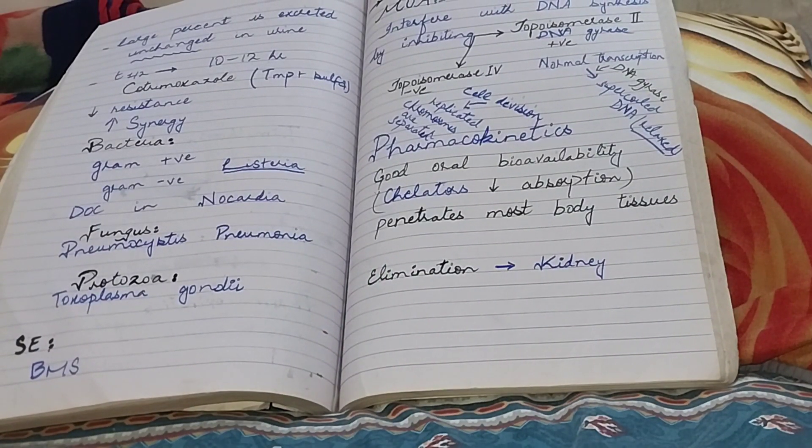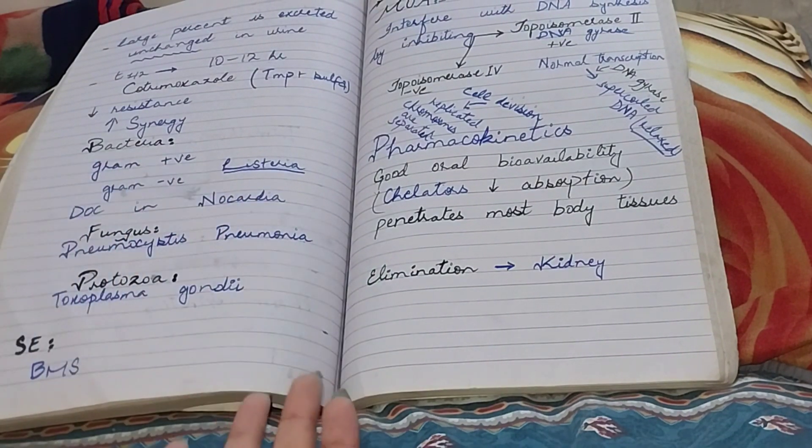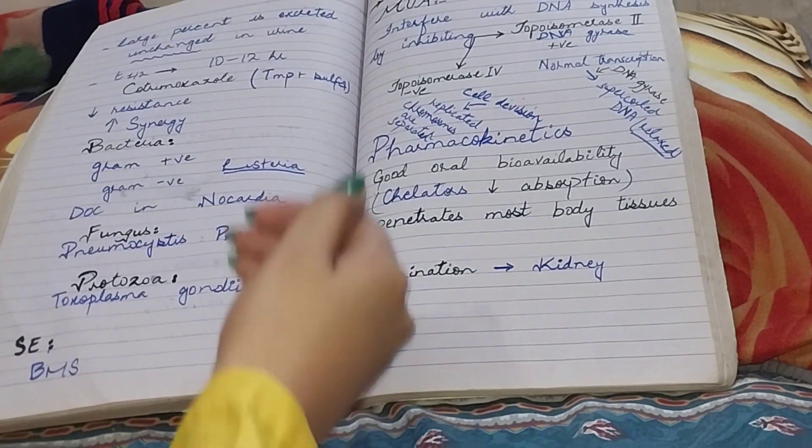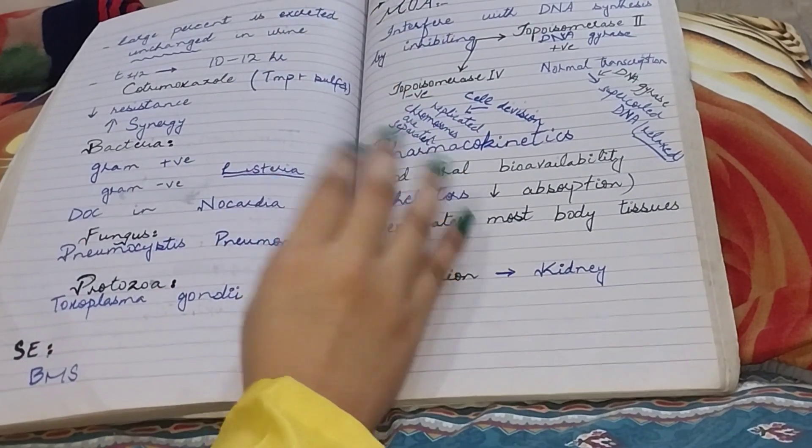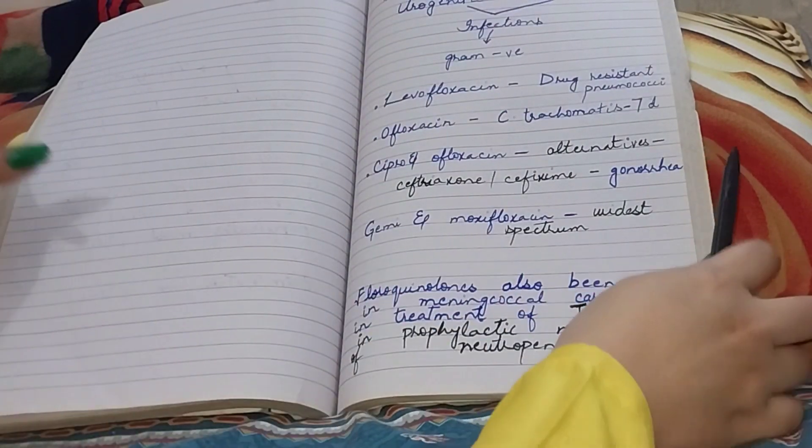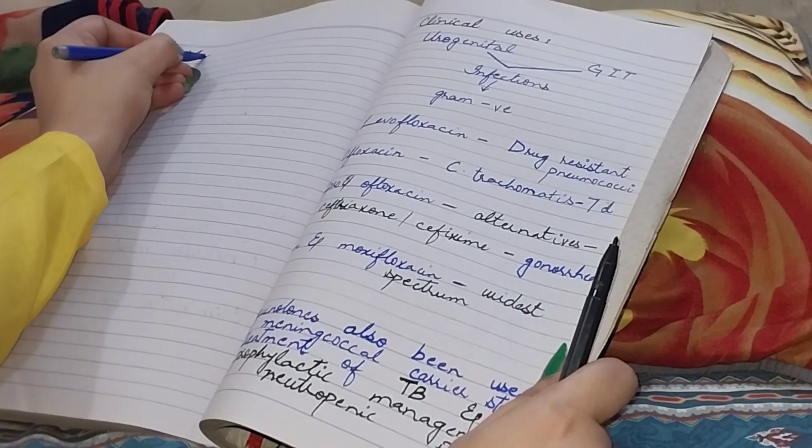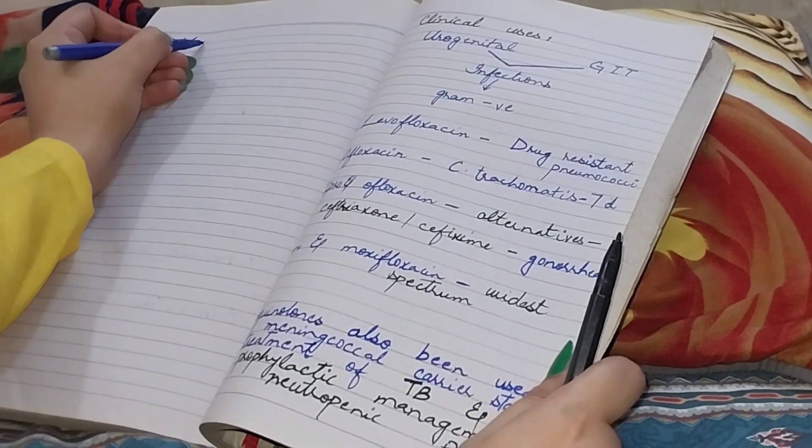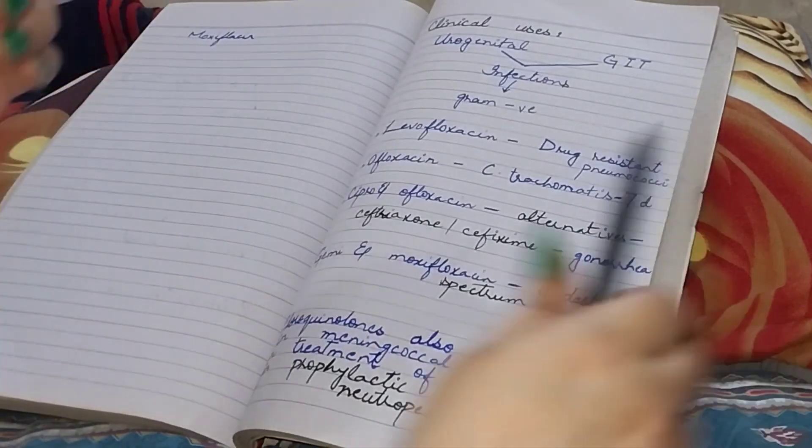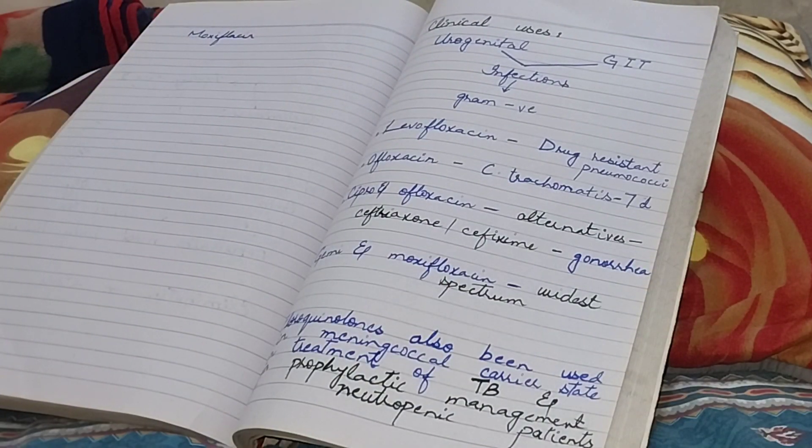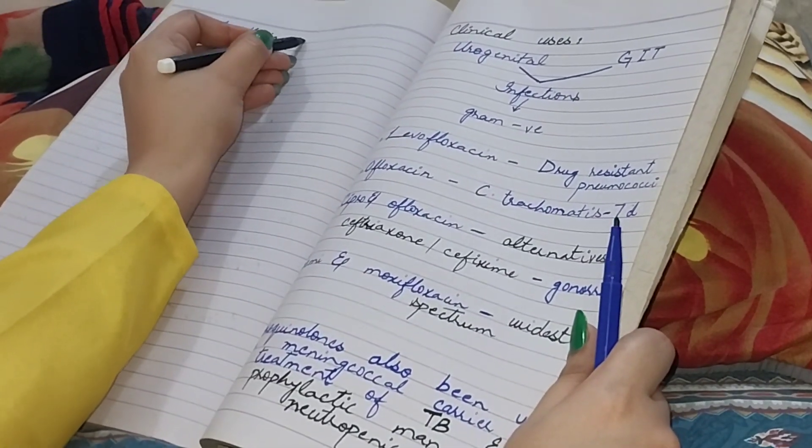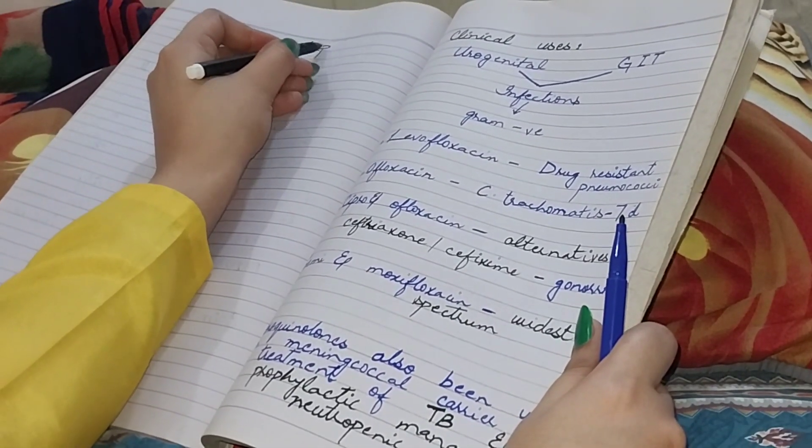Via active tubular secretion which can be blocked by probenecid, so it means dose reduction is usually needed in renal dysfunction except for moxifloxacin, because moxifloxacin is eliminated by hepatic metabolism.